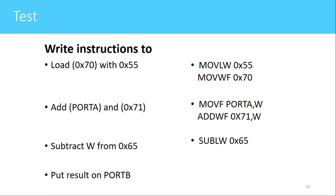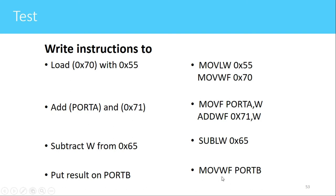For the third statement, we have SUBLW 0x65. With this, the value present in the working register will be subtracted from 0x65 and the result will be stored in the working register. Finally, the result in the working register needs to be copied to Port B, so we use the instruction MOVWF Port B, which copies the contents of the working register to the Port B register.